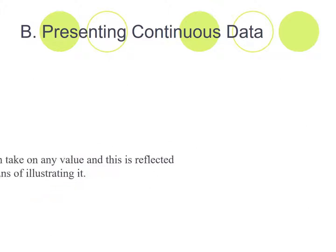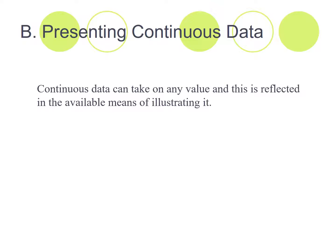Presenting continuous data. Continuous data can take on any value and this is reflected in the available means of illustrating it. So if you can have a 0.5 or a 0.3 or a 0.7, that's continuous data. The most widely used diagrams are histograms that we saw previously, or line graphs. And you probably have seen these when you were at school. Scatter diagrams are also common as well. And Lorenz curves.